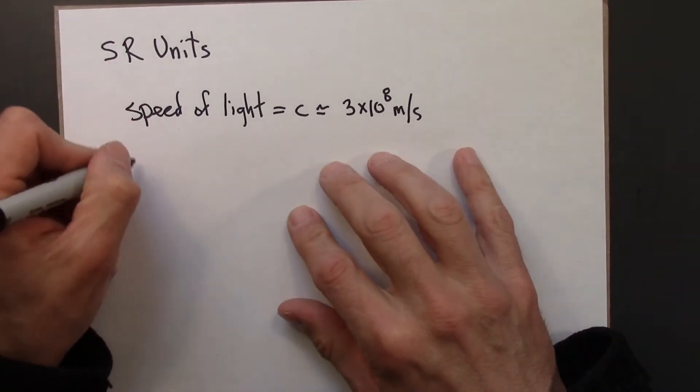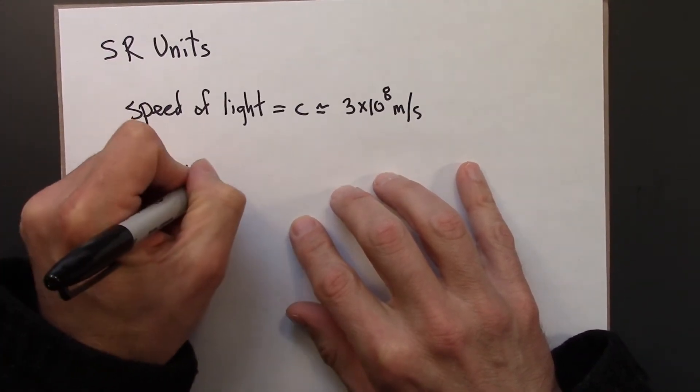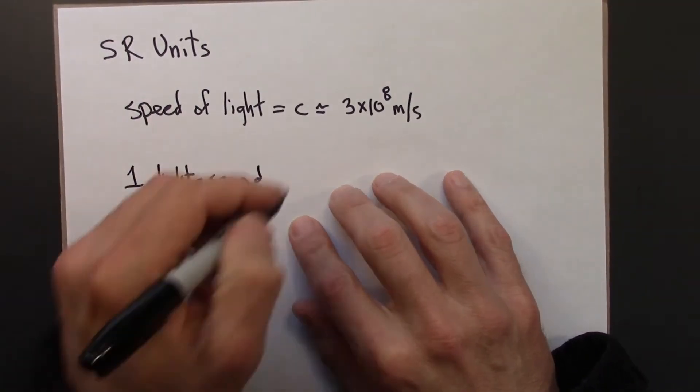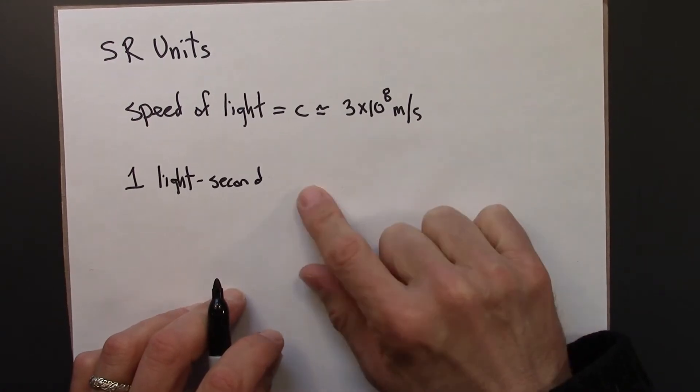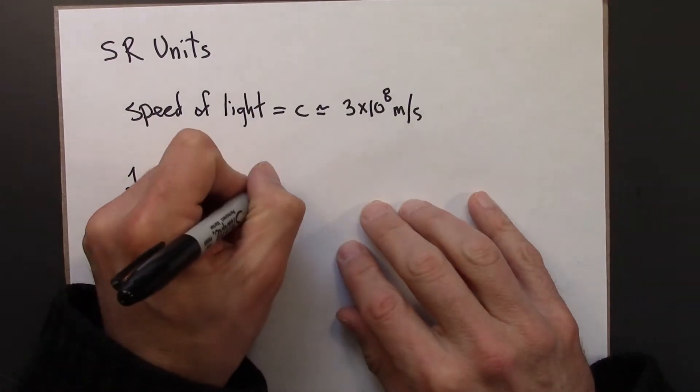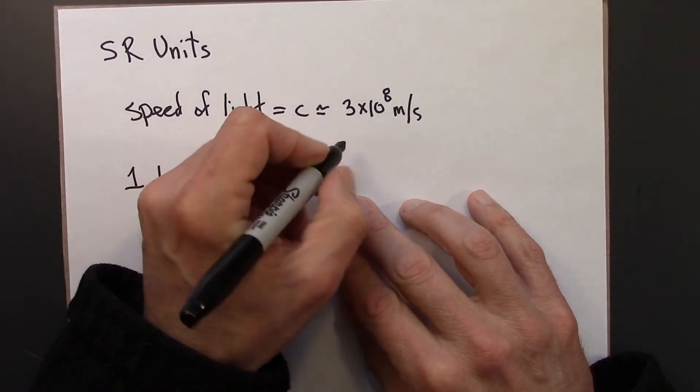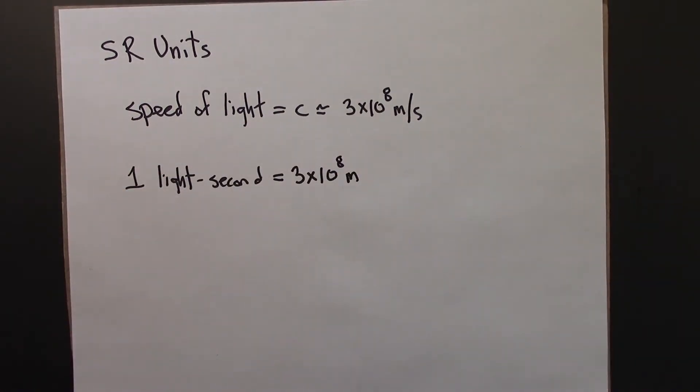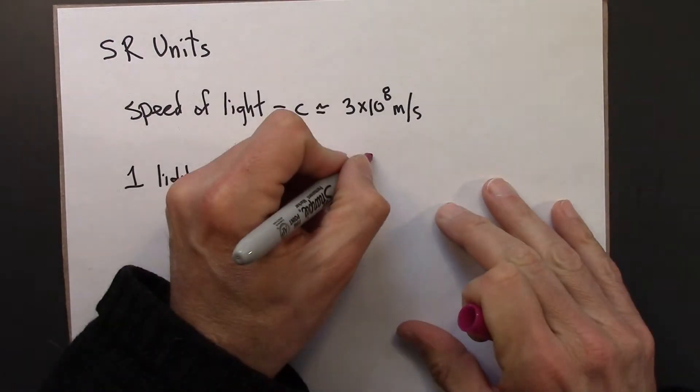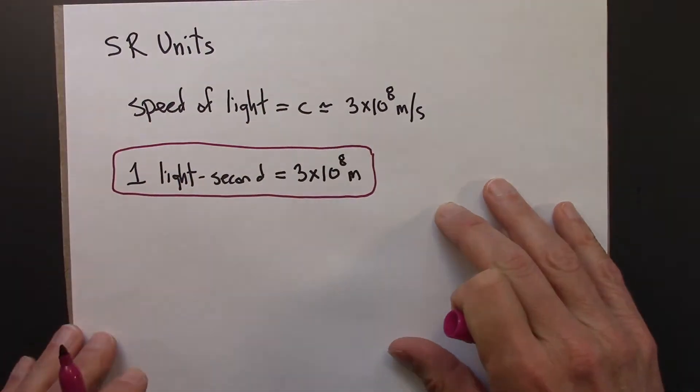So, one light second is the distance that light travels in one second. So that would just be 3 times 10 to the 8 meters. So this gives us a conversion factor which tells us how to convert from meters into light seconds.